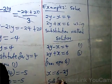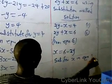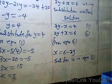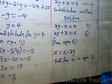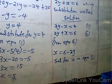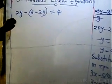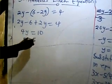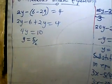Substituting x equals 6 minus 2y into equation 1: 2y minus (6 minus 2y) equals 4. Opening the bracket: 2y minus 6 plus 2y equals 4, giving 4y equals 10. Dividing both sides by 4: y equals 10 over 4, which is 5 over 2. This is the same result as before.